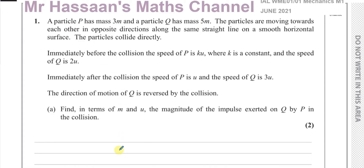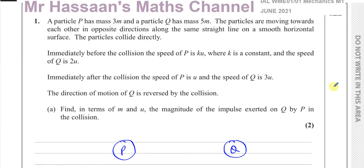Let's make a little diagram to help understand what's going on. I'm going to draw particle P and particle Q as ball shapes. The particle P has mass 3m — you have to be very careful to label things carefully — and particle Q has mass 5m.